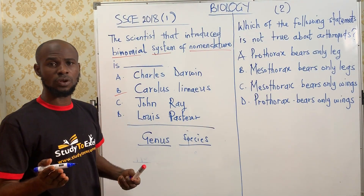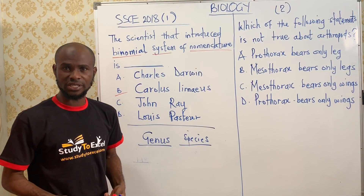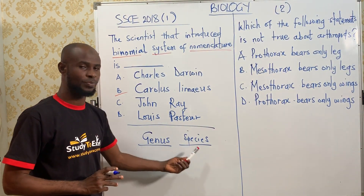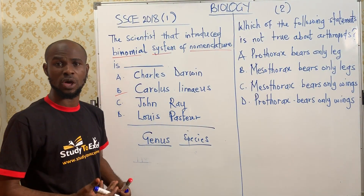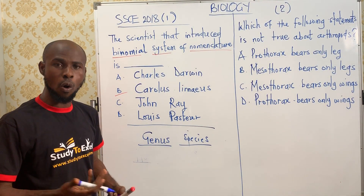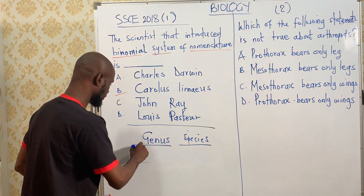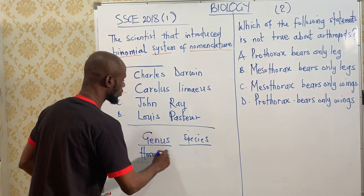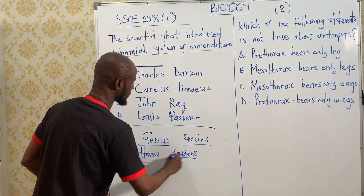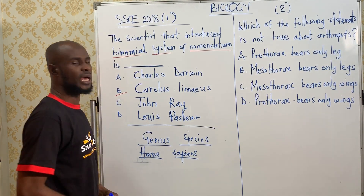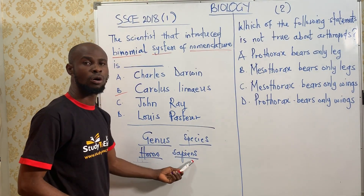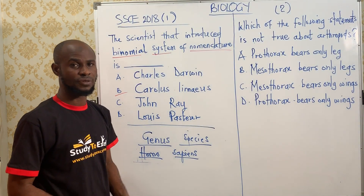Let's give an example of an organism and attach the genus name and the specific name to it. For example, we have human beings. Human beings have the name Homo sapiens. When you combine both the generic name and the specific name, the result is called the scientific name.